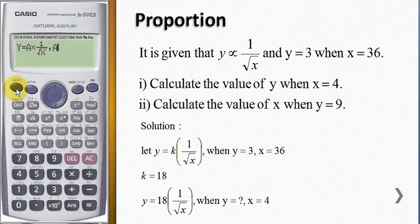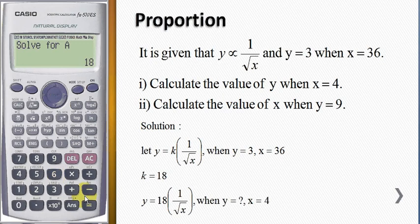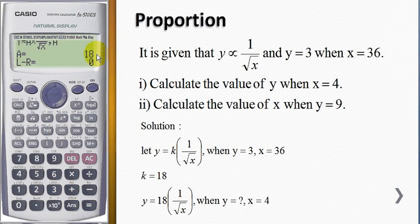So I press shift and calculate, which calls solve. Y equals 3, x equals 36, and we want to solve for the value of a. For the initial guess, I put 2. The calculator tells us a equals 18, and the left hand side minus the right hand side equals 0. So a equals 18 is the solution for this equation.